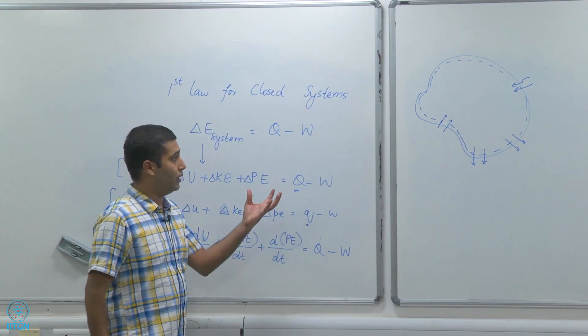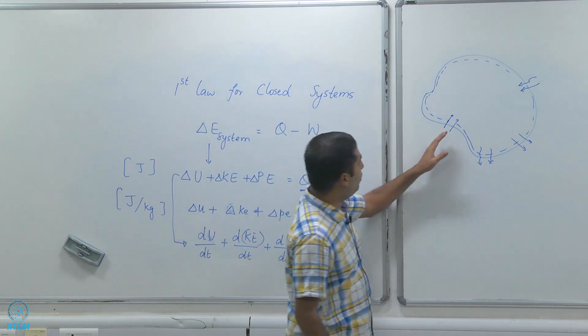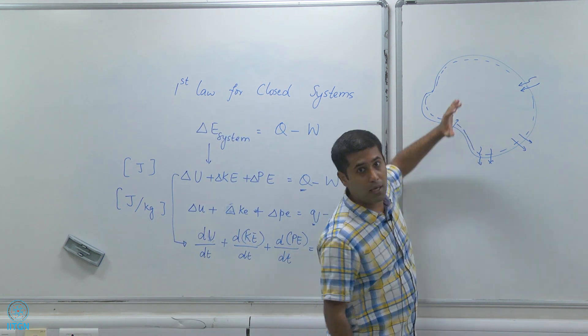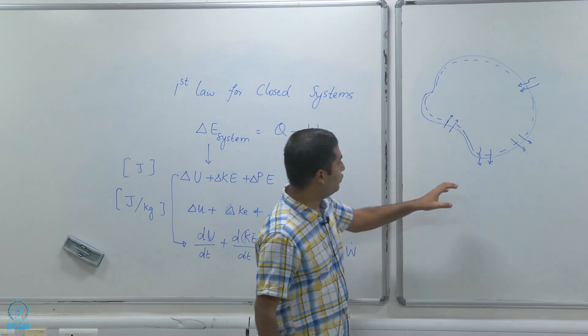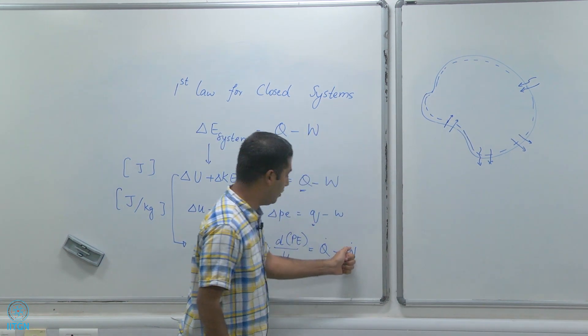I have only got to look at the boundary. The number of joules per unit time is what is Q dot, and the number of joules again per unit time is W dot.